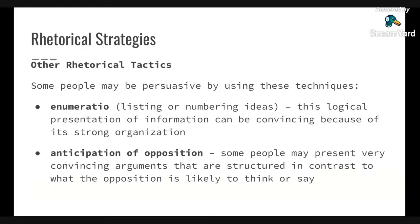Anticipation of opposition — some people present very convincing arguments structured in contrast to what the opposition is likely to think. The author or speaker thinks ahead before they even voice their argument, anticipating what the opposition is going to say. For example, say you're 12 years old and you want a puppy. You'll think ahead — they're going to ask about the goldfish that died, who's going to train it, who's going to feed it. You go through all that and then, whenever you go talk to them, you're already addressing those points before they even get to them, structuring your argument around that.